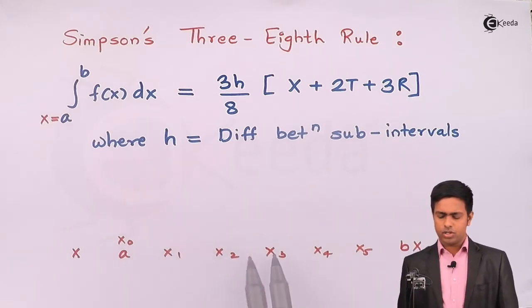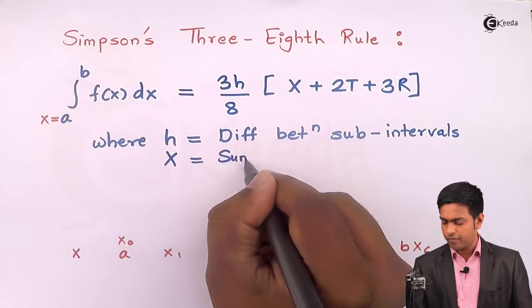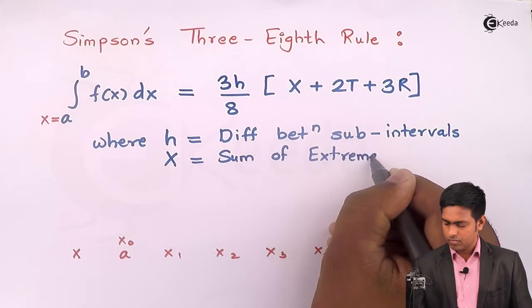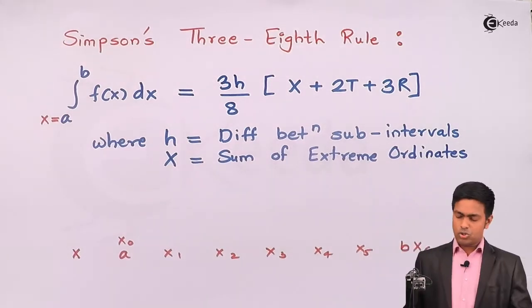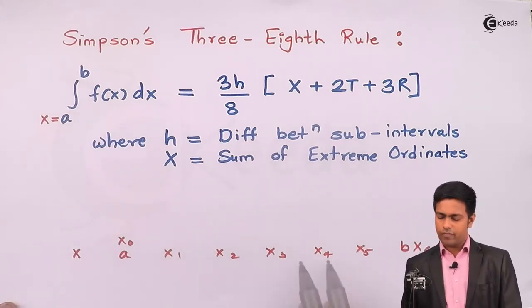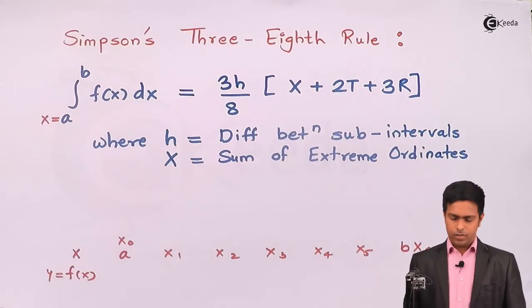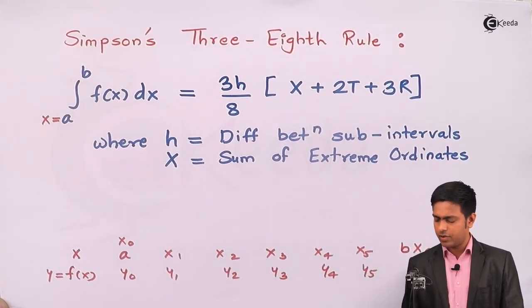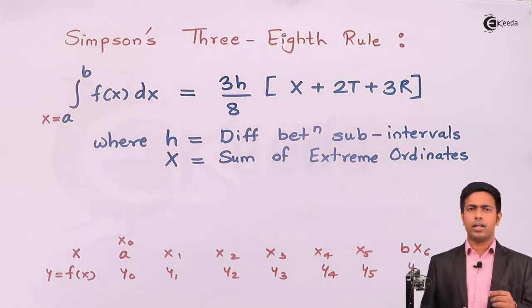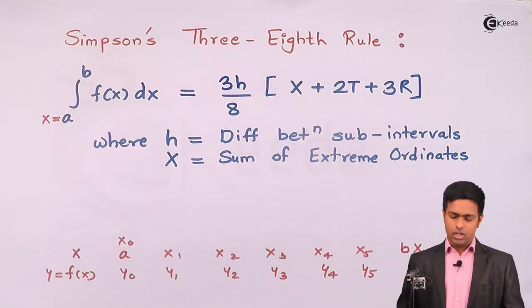Next, X is nothing but the sum of extreme ordinates. An ordinate is the y-coordinate, so for each value of x we find the value of f(x), which is our y. So we get y0, y1, y2, y3, y4, y5, and y6. These values of y are called ordinates. The sum of extreme ordinates means the sum of y0 and y6 — the first and last values — and that is called X.